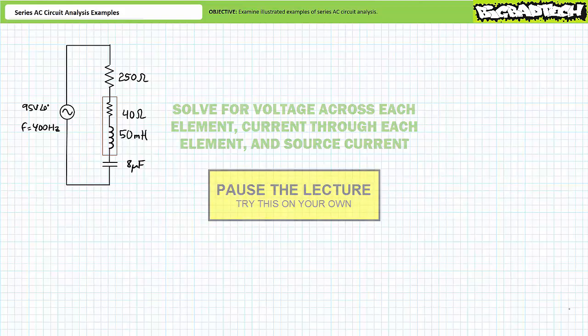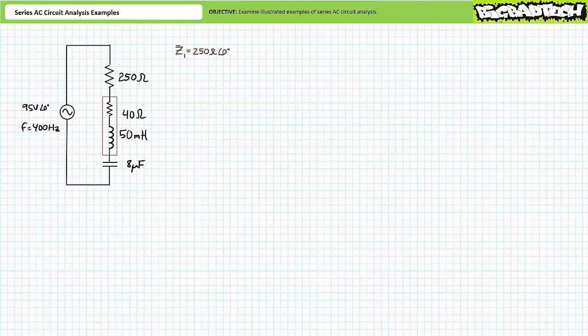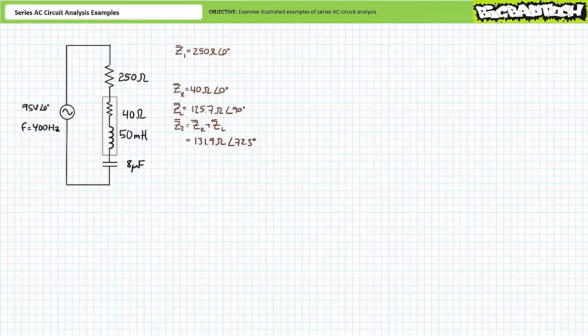If you're tracking, you should have obtained the following results. The complex impedance of the 250 ohm resistor is 250 ohms at an angle of zero degrees — let's call this Z1. The complex impedance of the non-ideal inductor: the resistive portion is 40 ohms at an angle of zero degrees, and the inductive portion at 400 hertz is 125.7 ohms at an angle of 90 degrees. In totality, the non-ideal inductor presents a complex impedance of approximately 131.9 ohms at an angle of 72.3 degrees — let's call this Z2. The complex impedance of the 8 microfarad capacitor at 400 hertz is roughly 49.7 ohms at an angle of negative 90 degrees — let's call this Z3.